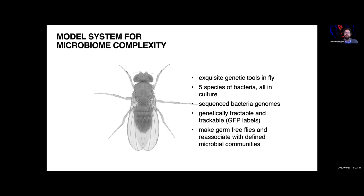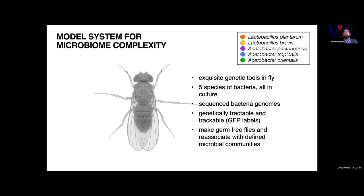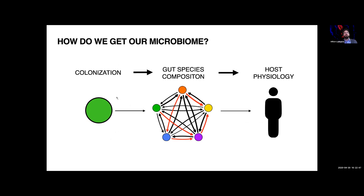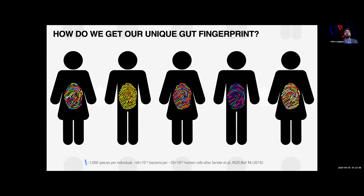The basic things my lab works on: how do we get our microbiome in the first place? Everyone has a different microbiome — how do we get that? How do the interactions between species change the microbiome we have, and how do those interactions actually change the physiology of the host fly? We each have a unique signature, but how do we actually get that signature in the first place?